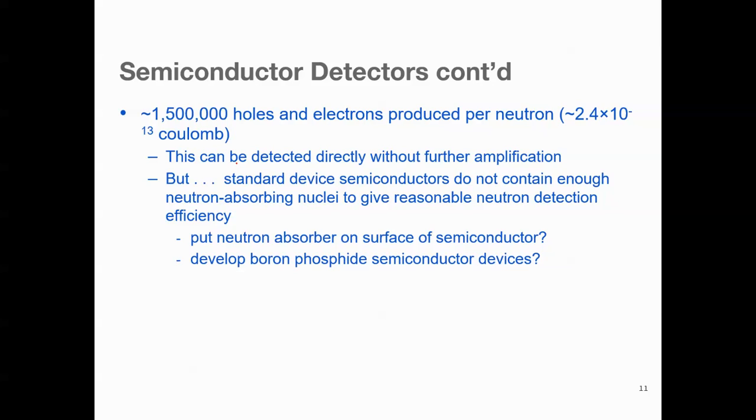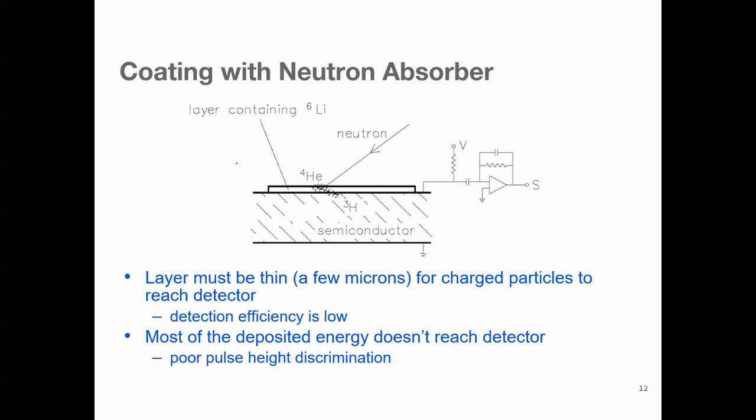But standard semiconductor devices do not contain enough neutron absorbing nuclei to give reasonable neutron detection efficiency. So we can think of two possible ways to tackle this. First is to put neutron absorber on the surface of the semiconductor, or we develop a semiconductor device that contains enough neutron absorbing nuclei to give reasonable neutron detection efficiency. So what happens if we do the coating with neutron absorber? The layer, first of all, must be very thin, a few microns, for charged particles to reach the detector. But even then, the detection efficiency is very low and most of the deposited energy doesn't reach the detector, hence poor pulse height discrimination.